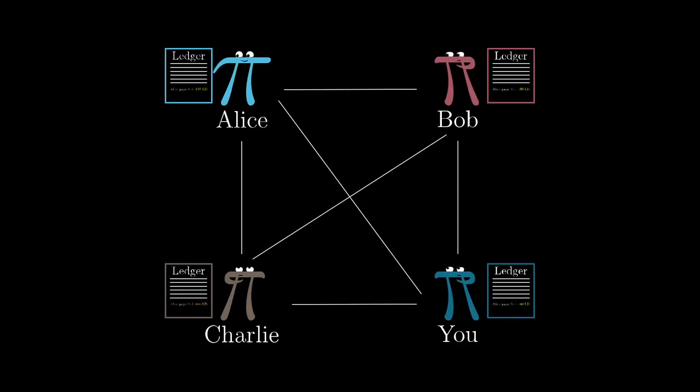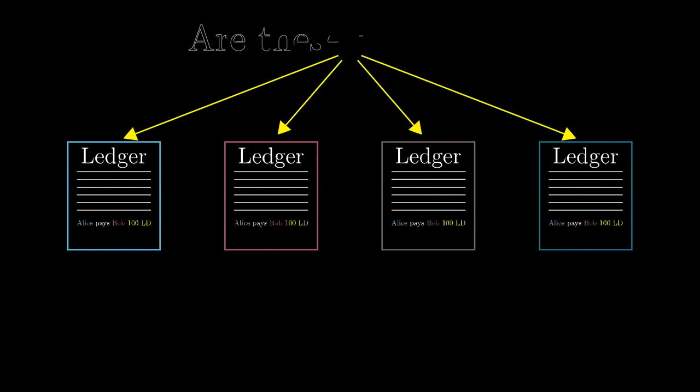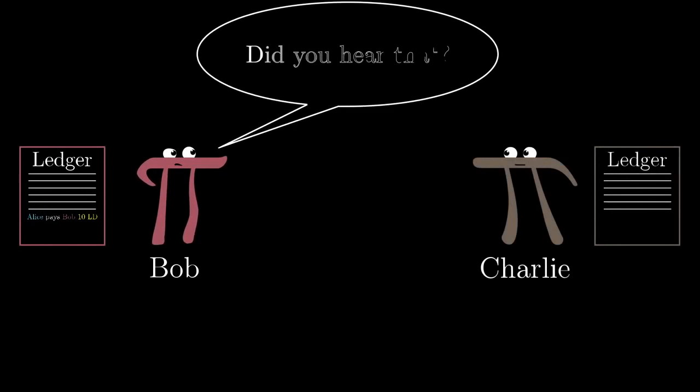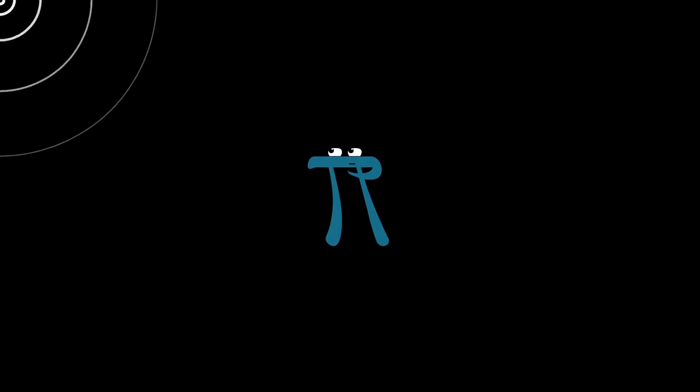But unless you do something more, this system is absurdly bad. How could you get everyone to agree on what the right ledger is? When Bob receives a transaction like Alice Pays Bob 10 ledger dollars, how can he be sure that everyone else received and believes that same transaction? That he'll be able to later on go to Charlie and use those same 10 ledger dollars to make a transaction? Really, imagine yourself just listening to transactions being broadcast. How can you be sure that everyone else is recording the same transactions and in the same order?